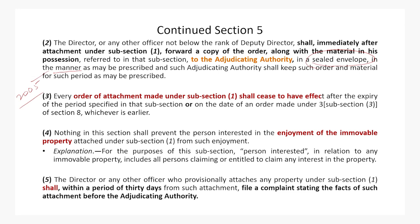Subsection 5: the Director or any other officer who provisionally attaches any property under subsection 1 shall within a period of 30 days from such attachment file a complaint stating the facts of such attachment before the Adjudicating Authority. The word used here is 'file a complaint.' The Enforcement Directorate says it is at this stage — when the original complaint is registered under Section 5(5) before the Adjudicating Authority — that PMLA prosecution actually begins.